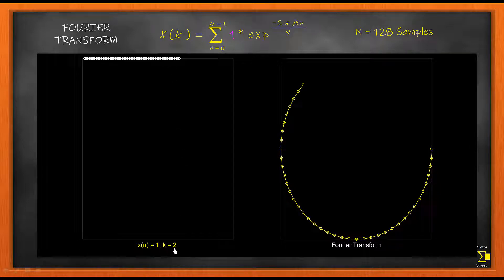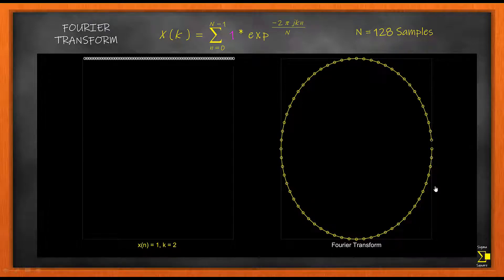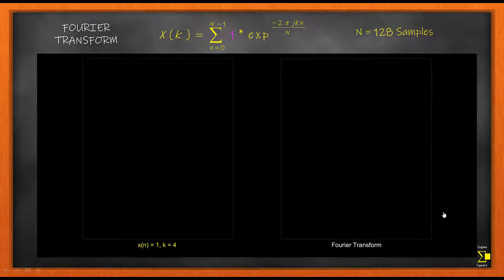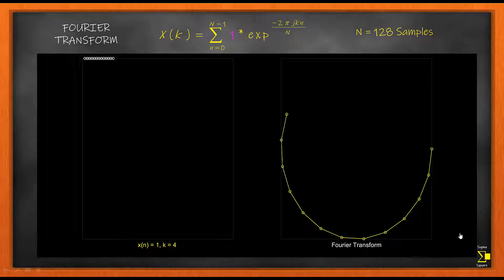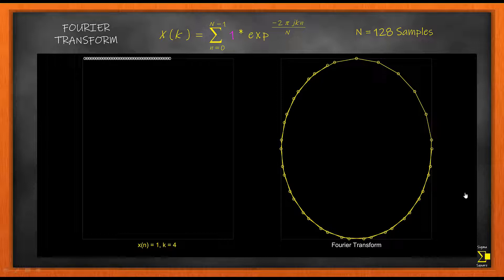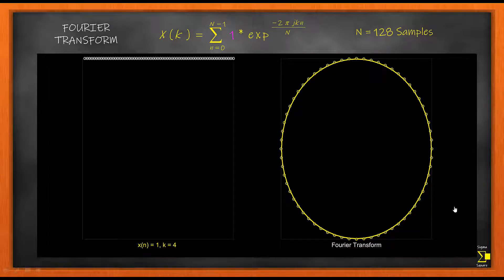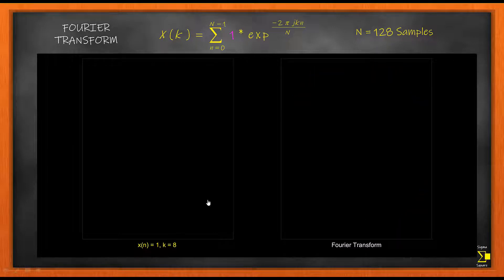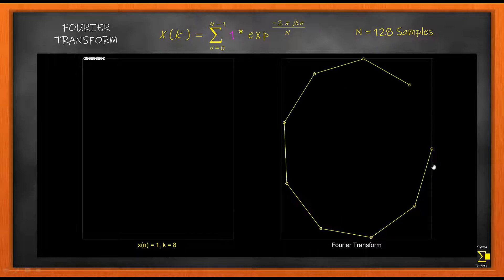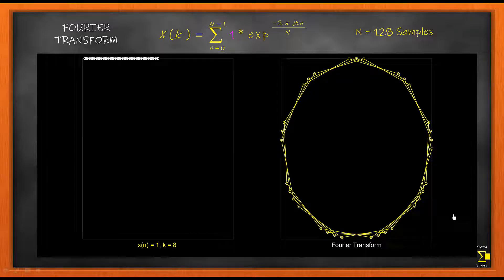When k equals 2, the Fourier transform is plotting 128 points in a circle. When k equals 4, something interesting happens — I am seeing 128 points getting plotted in the same circle but in around 3 cycles, so the 128 points are fitted in this circle over 3 times. When I set k to 8, I get 7 times, so this circle is being filled by 128 points 7 times.